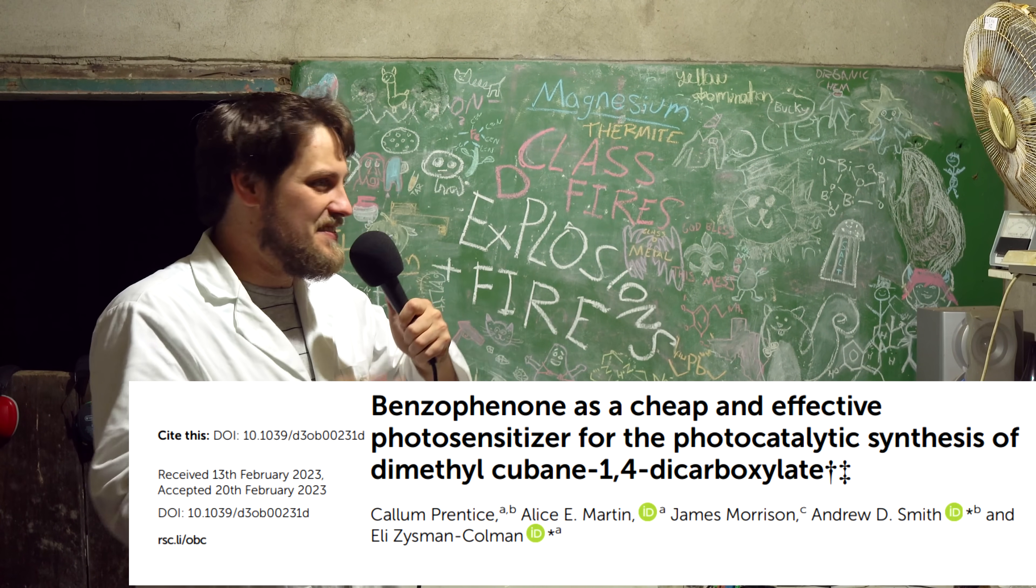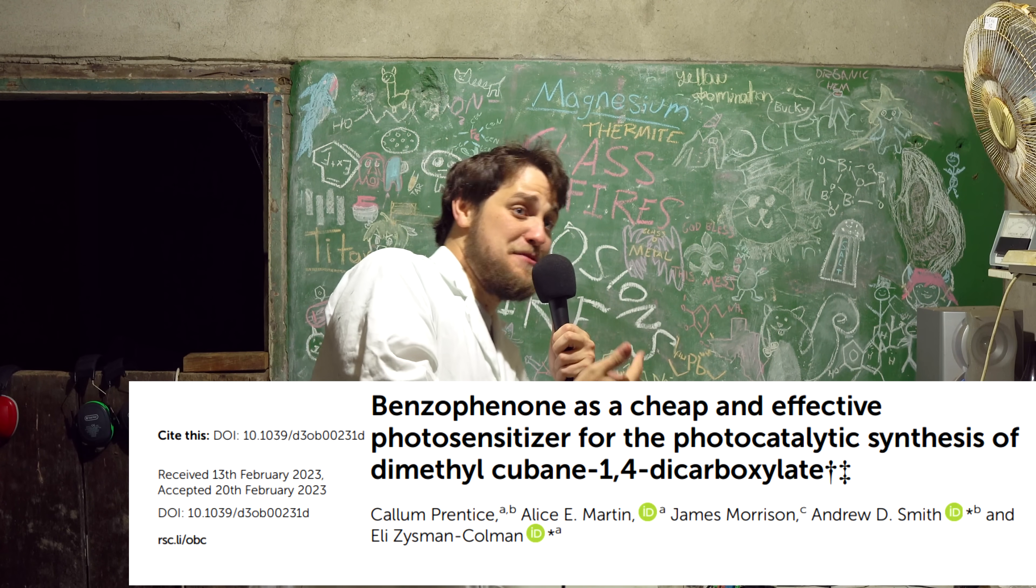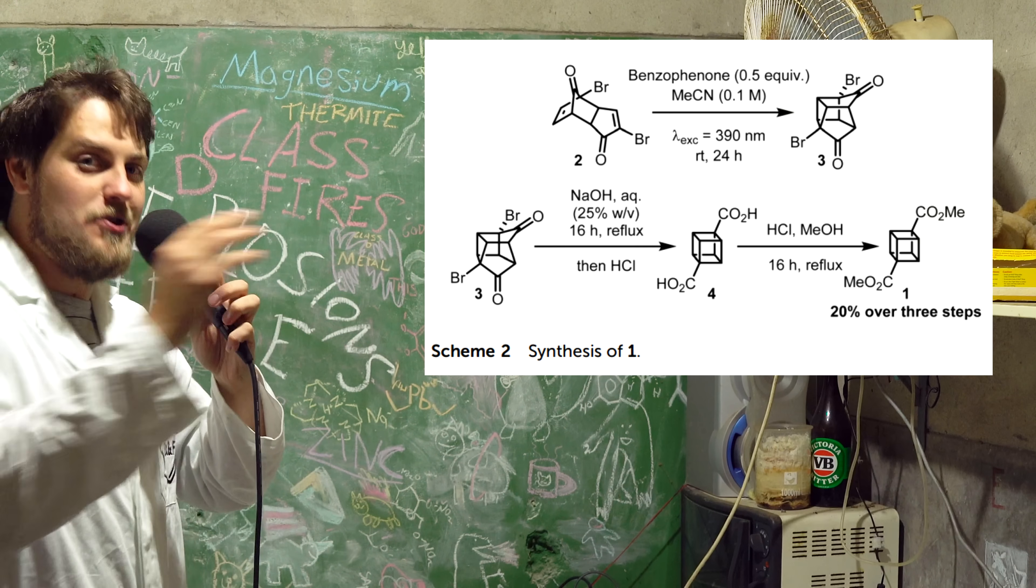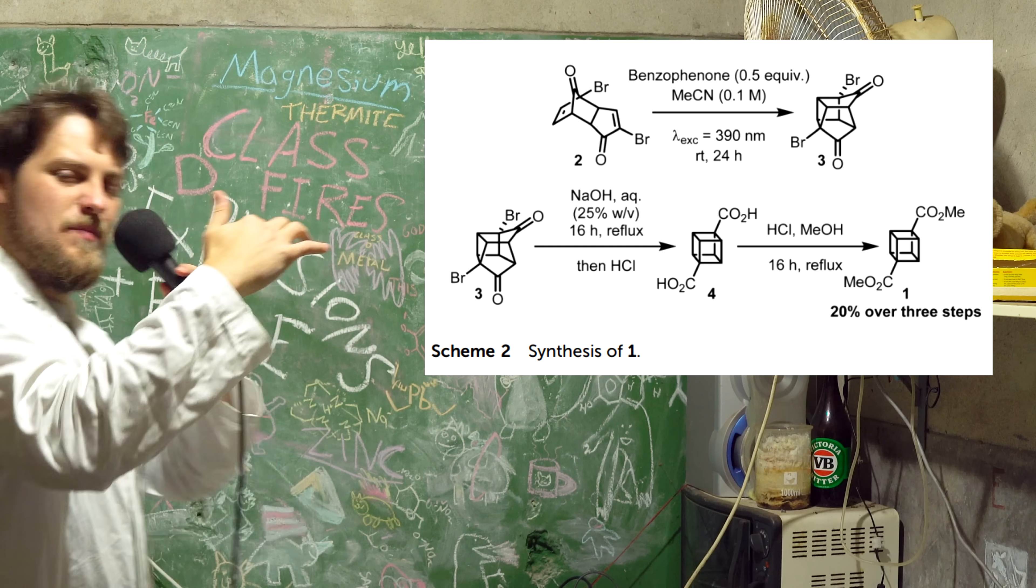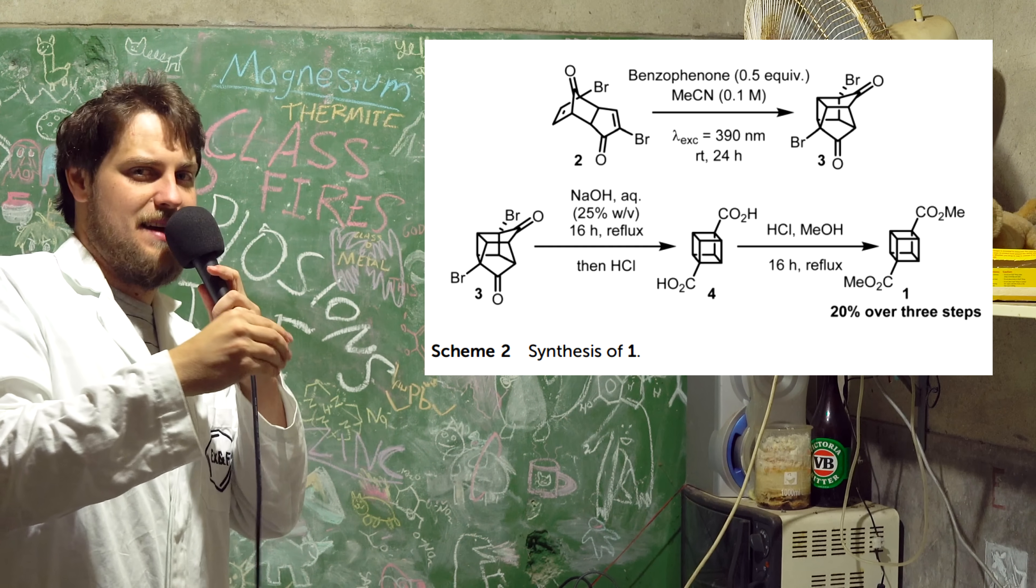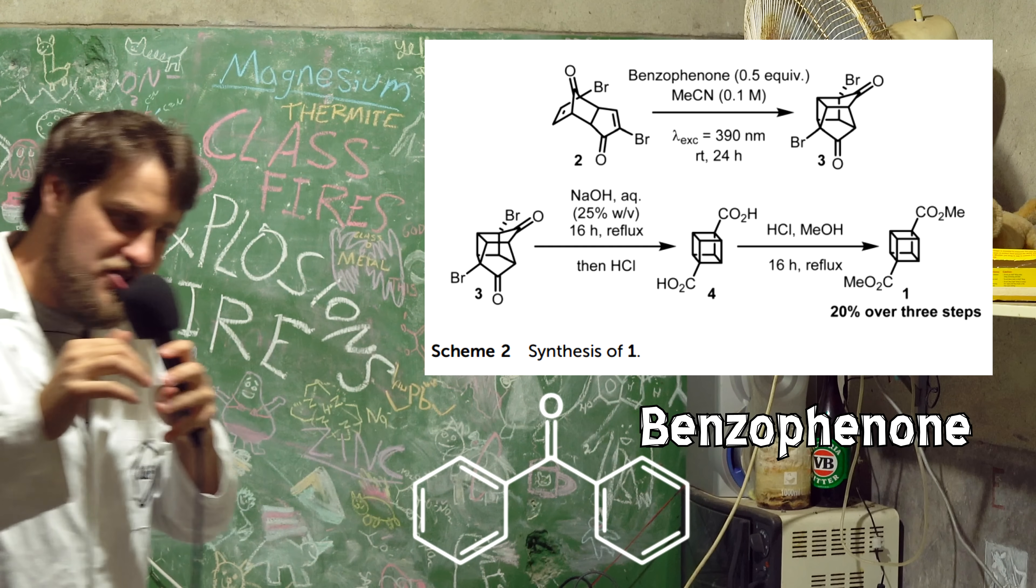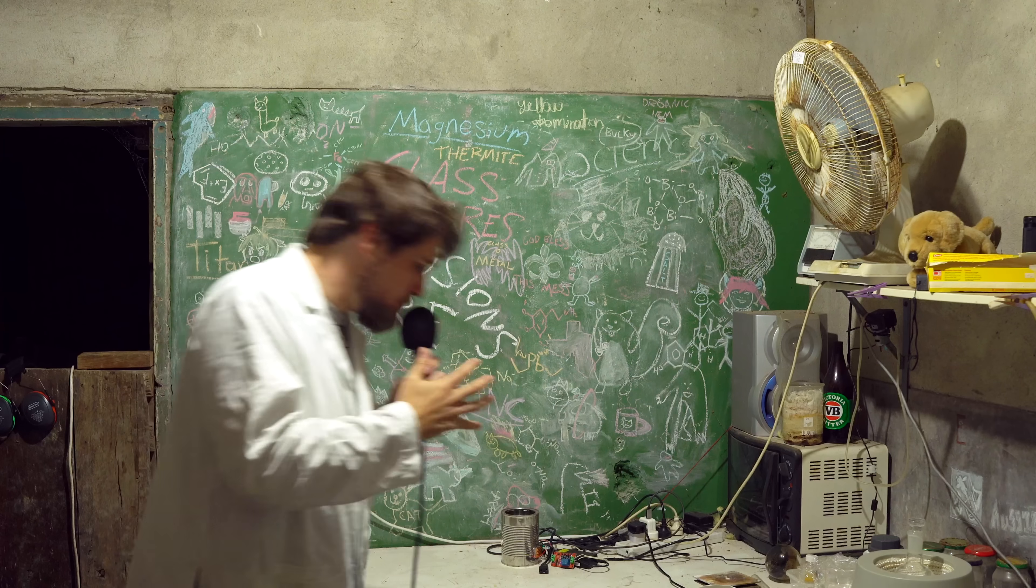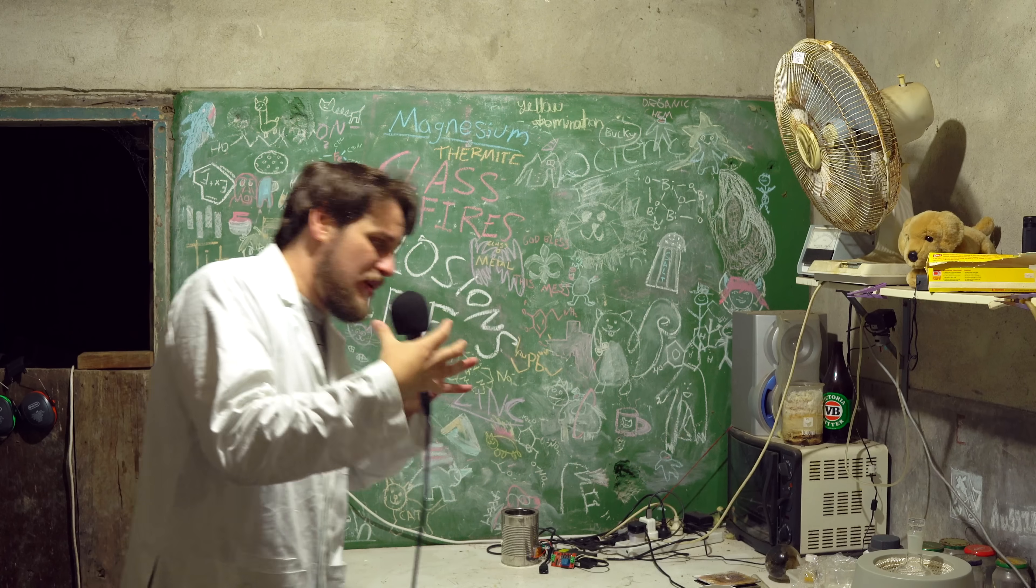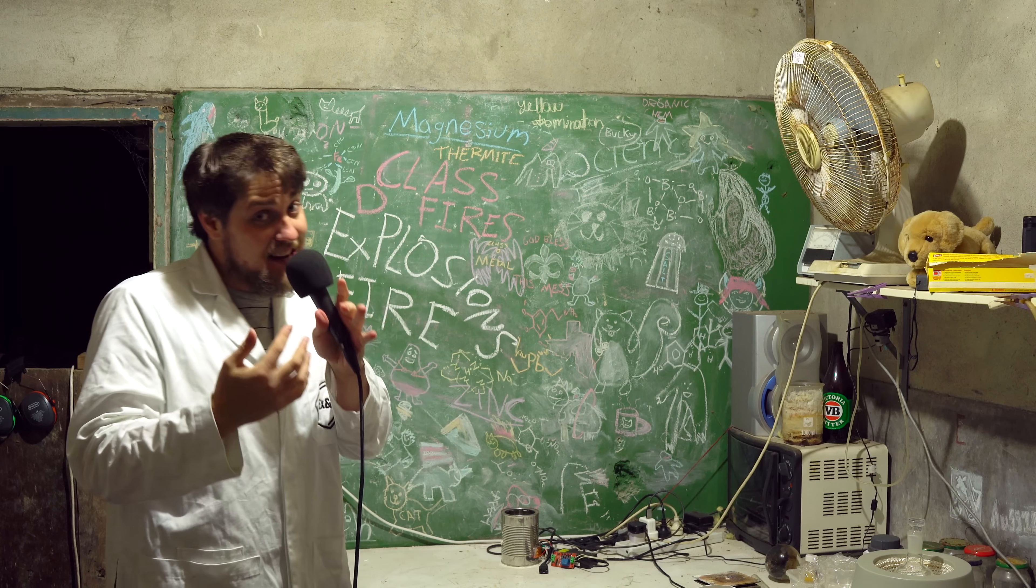But okay, here's the real important paper out of the Zeisman Coleman Lab over at the University of St. Andrews. This is a cubane paper about an alternative way of doing the UV step instead of pumping light directly into the first excited state of that cubane precursor. That state is really weakly absorbing, which doesn't really help. What you're doing is you're adding a photosensitizer in there, benzophenone, and instead, you're putting the light into that benzophenone and then the benzophenone is transferring that energy onto your cubane molecule and driving that reaction. This is really important because benzophenone is very good at absorbing light, but also the wavelength is shifted away from this sort of 311 nanometer terrible window that we've been trying to hit and actually they've done it with 390 nanometer light.